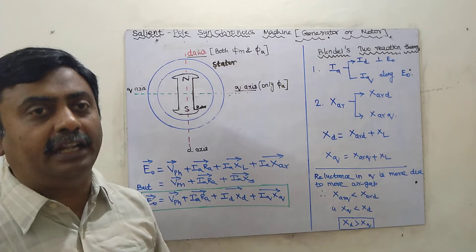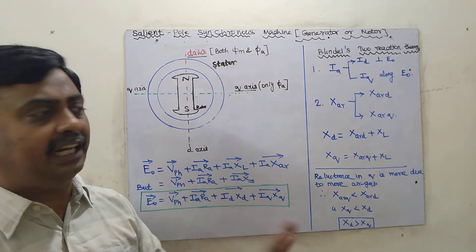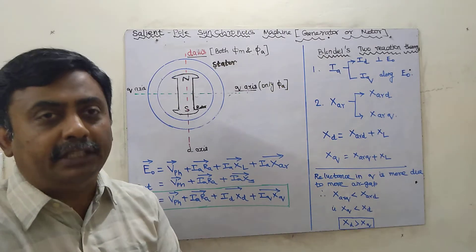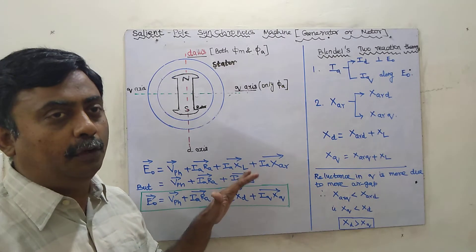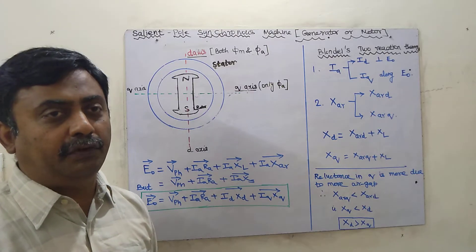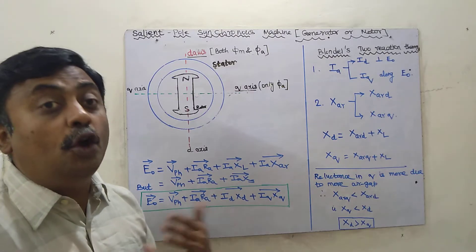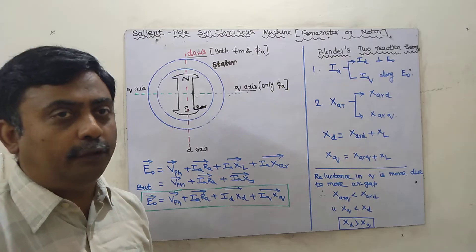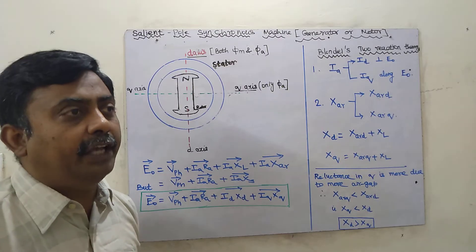Due to the non-uniform air gap, the reluctance in the field axis (D-axis) will be low, whereas along the quadrature axis the reluctance will be more. So the analysis we have already seen for non-salient pole alternators — using the EMF or MMF method — is not useful here. We have to go for a different method to find the voltage regulation.